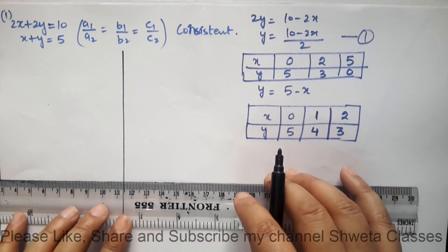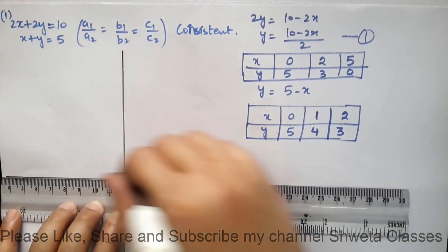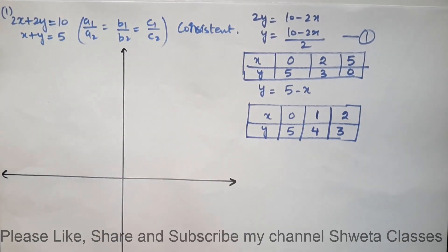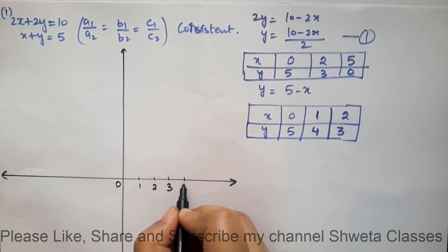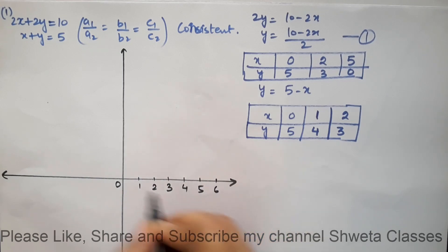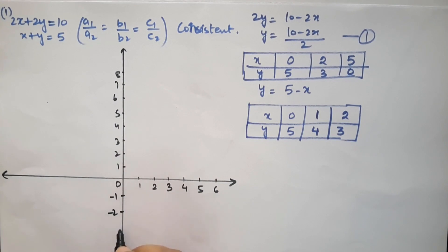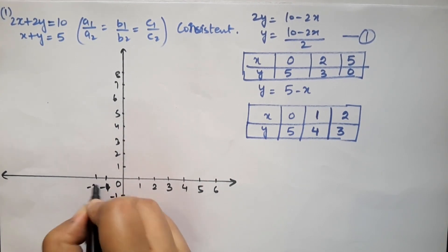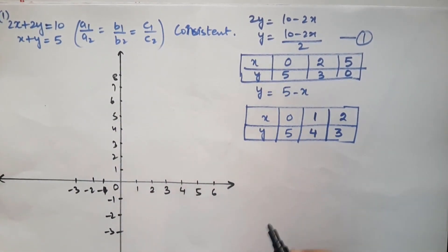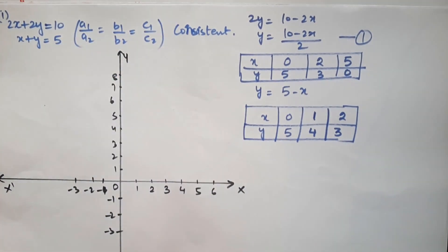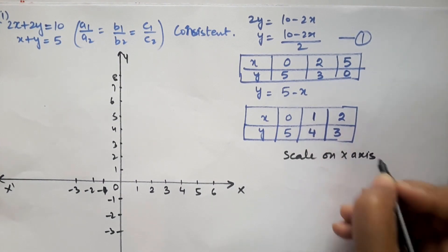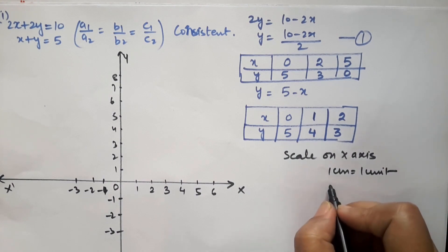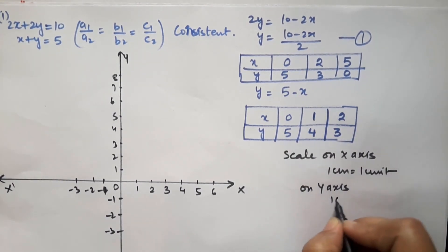I will sketch the graph — you can plot it on graph paper. I have uploaded many videos on how to draw graphs. We will set up the axes (x, x', y, y'). Very importantly, we must always write the scale. Here we take 1 cm = 1 unit on both the x-axis and y-axis.